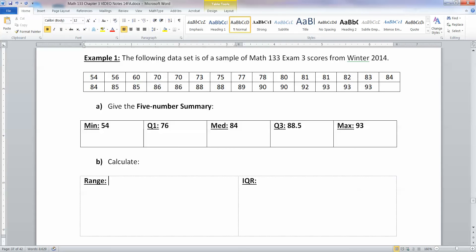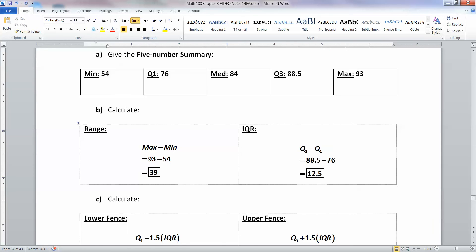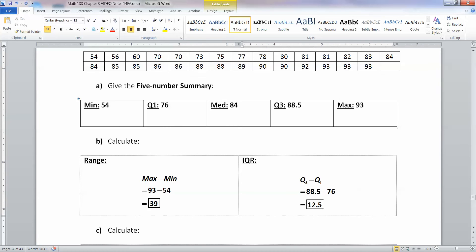Let me just review for you real quick. The range is the max minus the min. That's 93 minus 54. I have here a quick review of some things we've already learned how to calculate early in the chapter. So we have the range, which is the max minus the min. That's 93 minus 54, which is 39. Then the IQR, which is Q3 minus Q1. That's 88.5 take away 76.